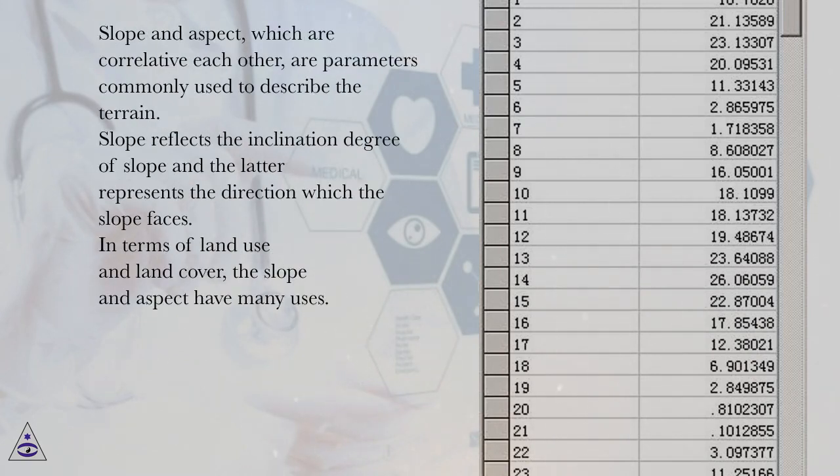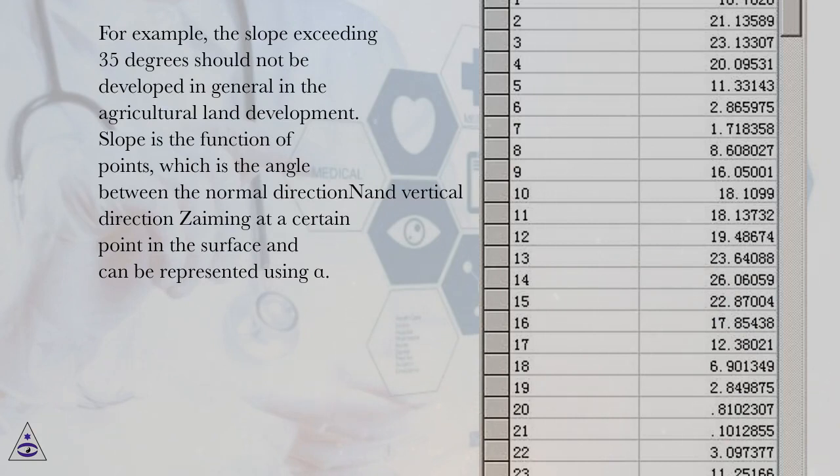Slope and aspect, which are correlative to each other, are parameters commonly used to describe the terrain. Slope reflects the inclination degree of slope and the latter represents the direction which the slope faces. In terms of land use and land cover, the slope and aspect have many uses. For example, the slope exceeding 35 degrees should not be developed in general in agricultural land development.